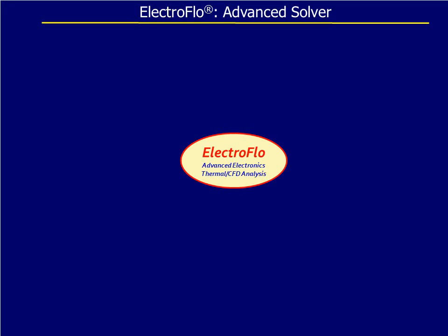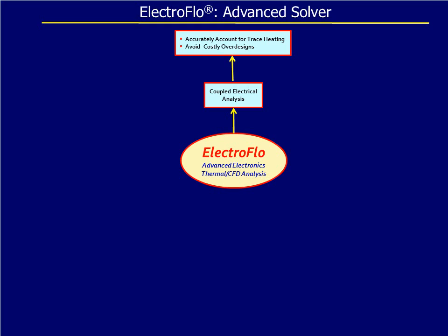Let's discuss some features and benefits of ElectroFlow. The first feature is the coupled electrical analysis, which includes a voltage potential equation solved along with the other system of equations. The main benefit is that it accurately and automatically accounts for self-heating of the traces, thereby avoiding costly over-designs. This has been one of the main benefits of the software since the late 1990s.